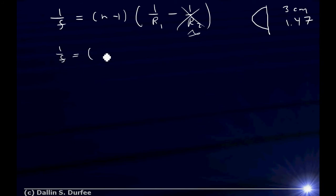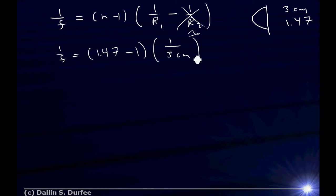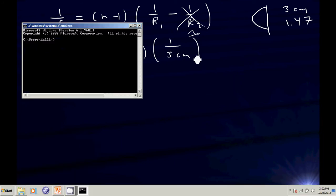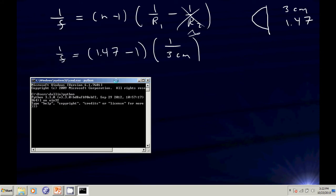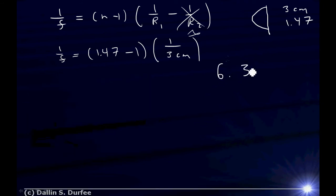So 1 over F equals 1.47 minus 1, times 1 over 3 centimeters. Let's pull up Python and calculate that. Taking 1 over that result, the focal length is 6.38 centimeters.